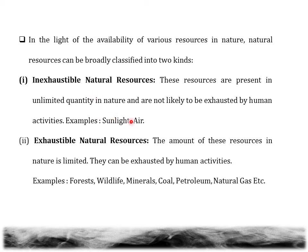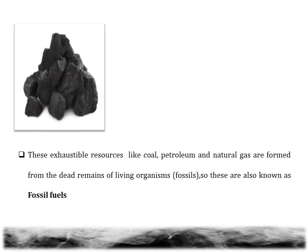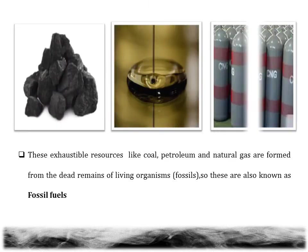Even though we use sunlight and air, these resources will not be exhausted — they will not run out. Whereas exhaustible resources, the amount of these resources in nature are limited. They can be exhausted by human activities. Examples include forest, wildlife, minerals, coal, petroleum, natural gas etc. So in this chapter we will study about some of these exhaustible natural resources like coal, petroleum and natural gas.